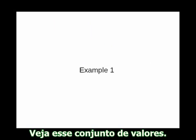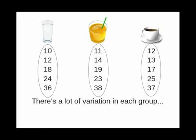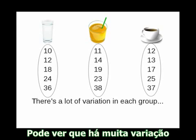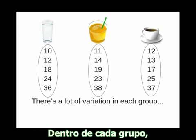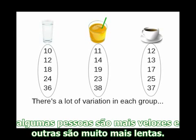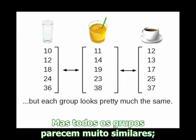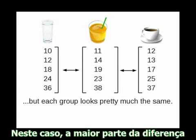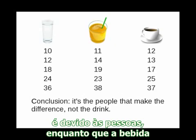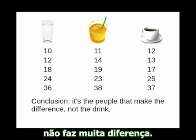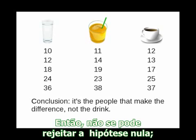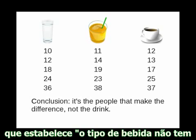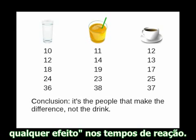Here's an example. Look at this set of scores — they've been sorted into order to make it easier to see the patterns. You can see that there's a lot of variation within each group: some people are faster, and some are much slower. But all the groups look pretty much alike; there's not much variation between the groups. In this case, you'd say that most of the difference is due to the people, and the drink didn't make much of a difference.